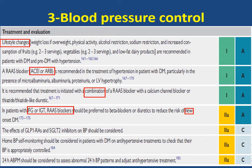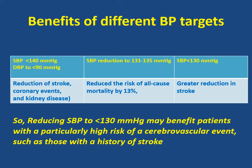It is recommended that treatment is initiated with a combination of a RAS blocker with a calcium channel blocker or thiazide diuretics. As regards patients with pre-diabetes including impaired fasting or impaired glucose tolerance, RAS blockers are preferred over beta-blockers or diuretics to reduce the risk of new onset diabetes.